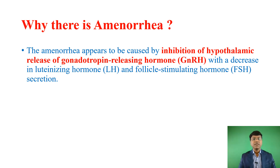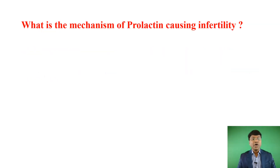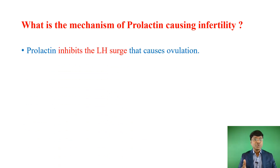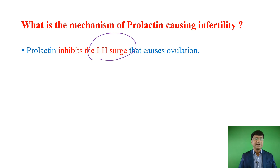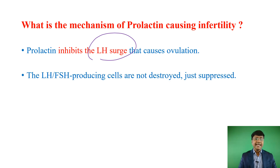What is the mechanism of prolactin causing infertility? In patients with prolactinoma or hyperprolactinemia, excess prolactin inhibits the LH surge. This LH surge is responsible for ovulation. So when there is no ovulation, there will be infertility. The LH and FSH producing cells are not destroyed — they are just suppressed by prolactin. That is a very important point to remember.